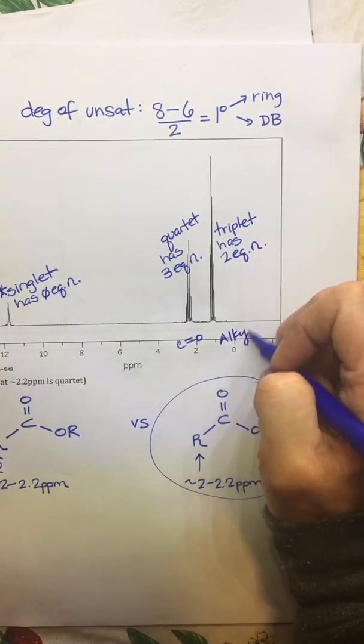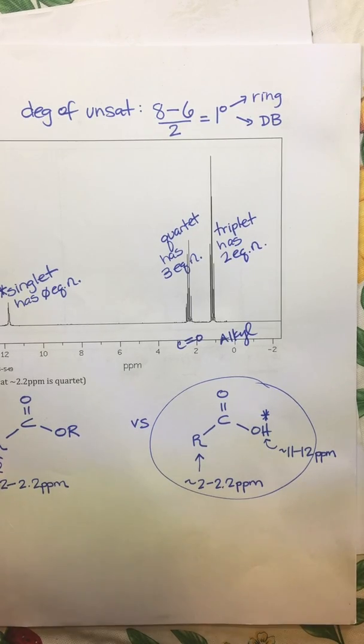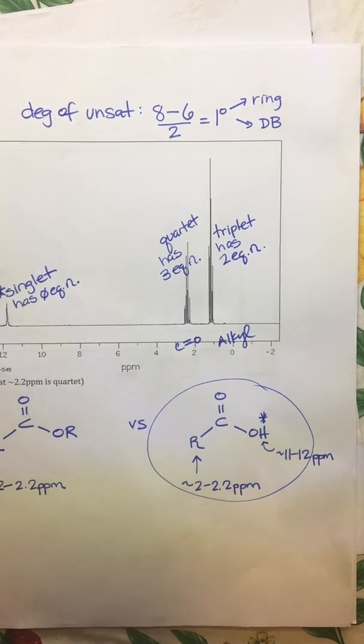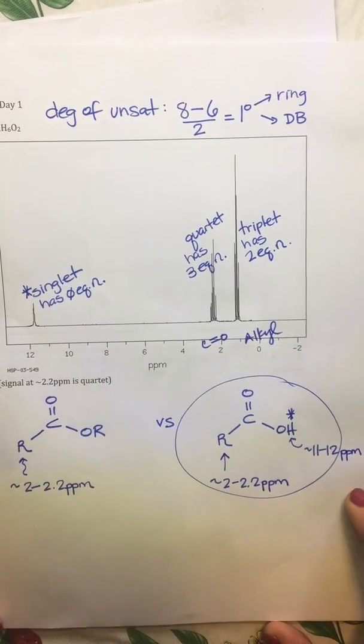And this is right around one. This is our more upfield alkyl area, so things that are further away from the electronegative atoms.